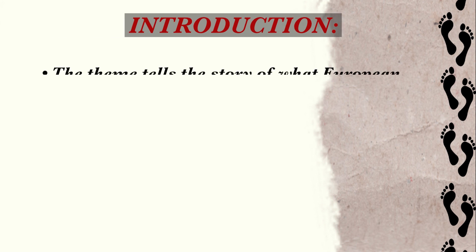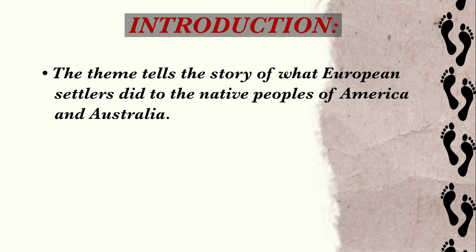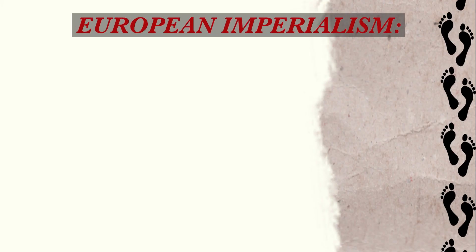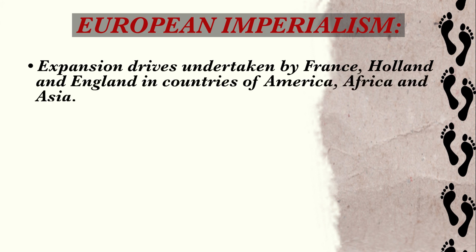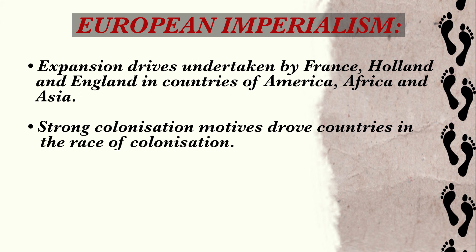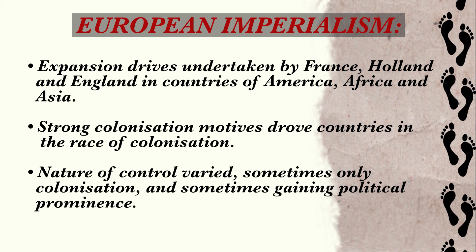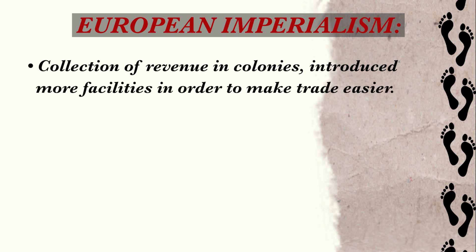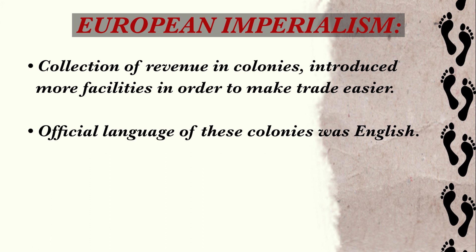Introduction: This theme tells the story of what European settlers did to the native peoples of America and Australia. The natives and the Europeans represented competing notions of civilization. Sources include oral history, fictional works, and later-built museums. European imperialism involved expansion drives undertaken by France, Holland, and England in countries of America, Africa, and Asia. Strong colonization motives drew countries into the race of colonization. The nature of control varied — sometimes only colonization and sometimes gaining political prominence. Collection of revenue in colonies introduced more facilities to make trade easier. The official language of these colonies was English.